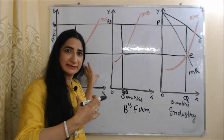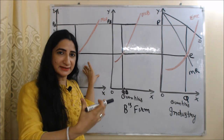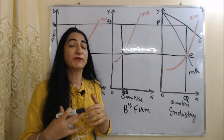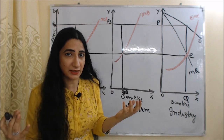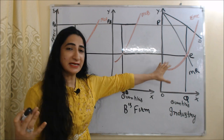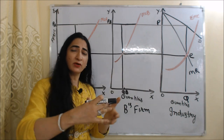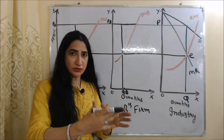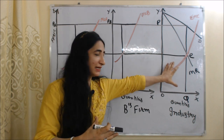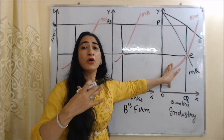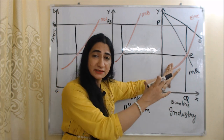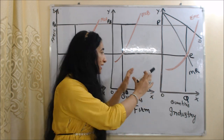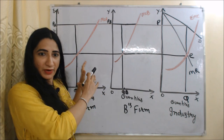As we discussed, in order to jointly decide their price and output under joint profit maximization cartel, firms form a centralized cartel board. This centralized cartel board will take all decisions regarding output quota, price, and distribution of profit. So this third diagram represents our industry and the decision of the centralized cartel board regarding price and output of these firms.